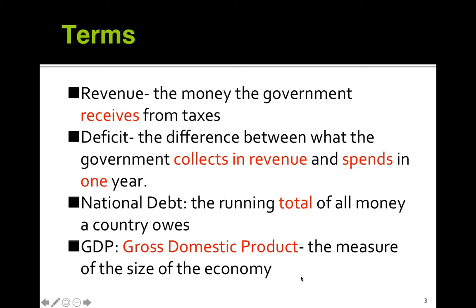Deficits are the difference between what the government collects in revenue and what they spend in one year. Most presidents will have a deficit and add to the national debt — the running total of all money a country owes. However, a couple of presidents such as Andrew Jackson and Bill Clinton were able to have zero deficit, meaning they balanced the budget — collecting the same amount of revenue that they spent. That's what most presidents aspire to do, though it's very tricky.